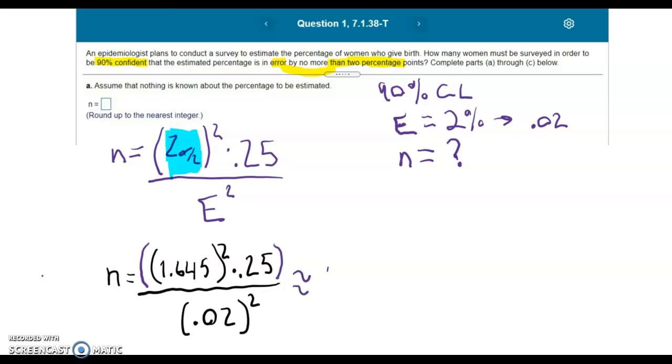After calculating, you should get approximately 1,691.27. For these problems, you're always going to round up to the next integer.